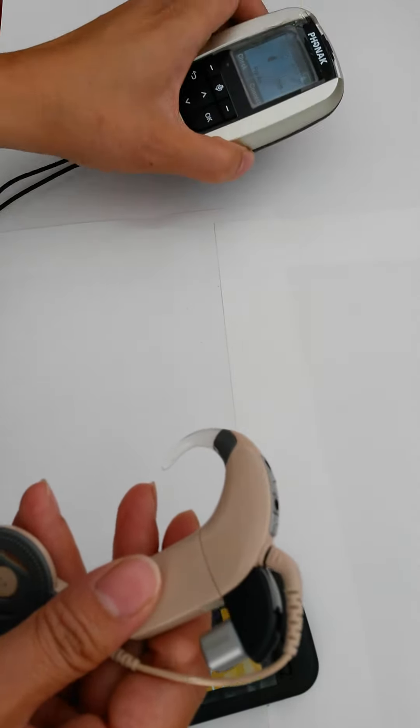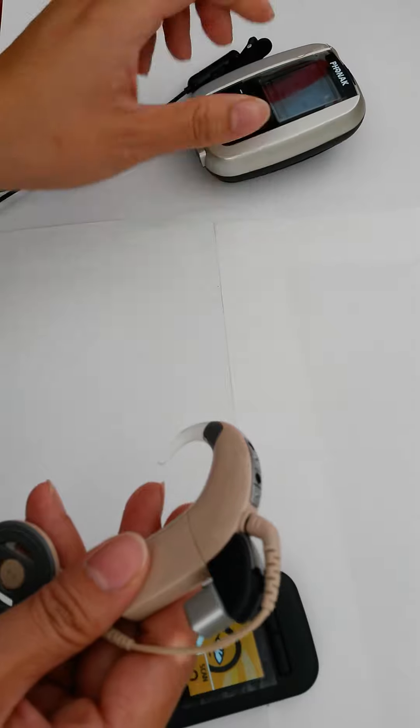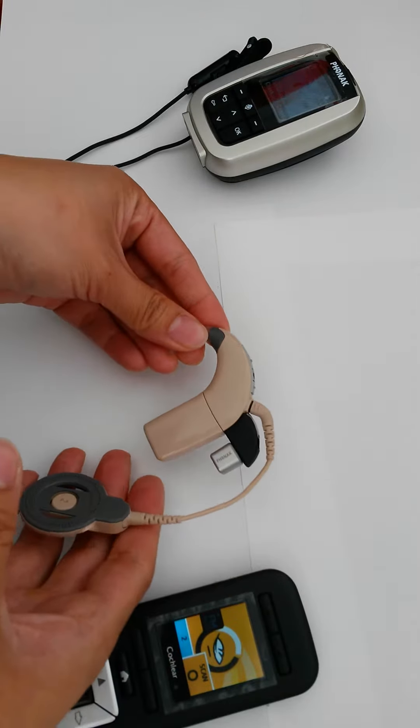If the processor is on the child's ear, the child will hear 3 beeps, which indicate the wireless connection is successful.